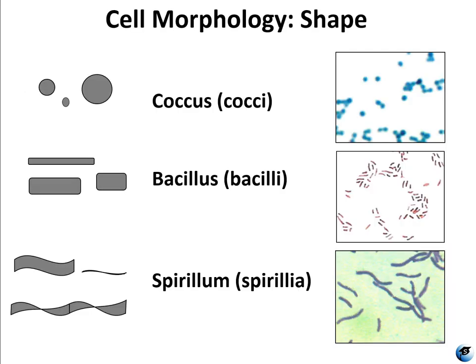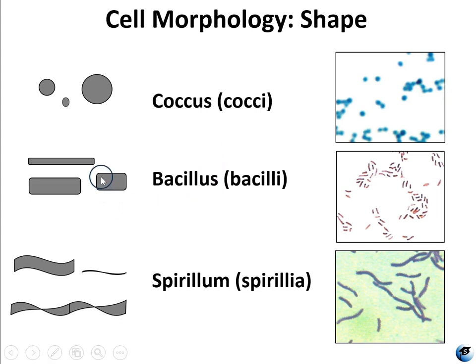Let's look at cell morphology. When we talk about shape, the specific morphology shapes include three most common ones you'll see in class. Cocci are perfectly round spheres — you can see how they're nice and round. If they are more stretched out and rod shaped, those are bacilli. Bacilli can come in different configurations — you can have short and stocky bacilli that almost look like cocci under the microscope, but if it's not a perfect sphere, it's not a coccus.